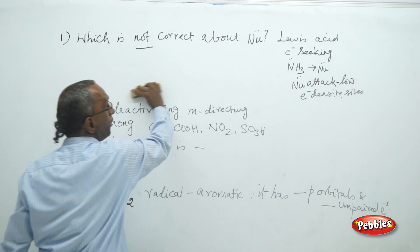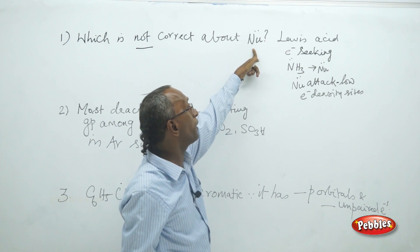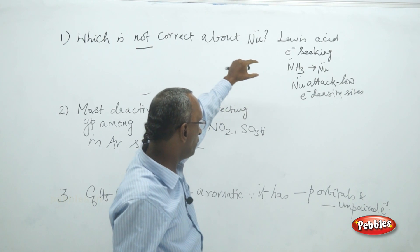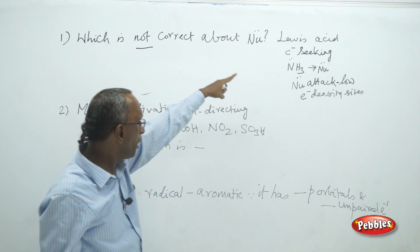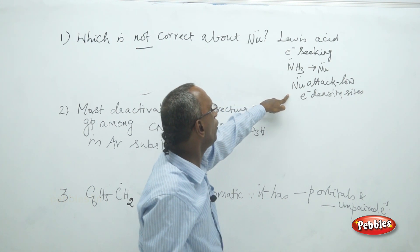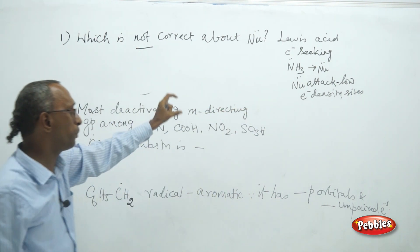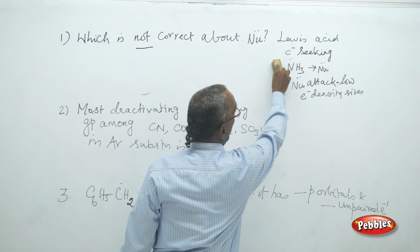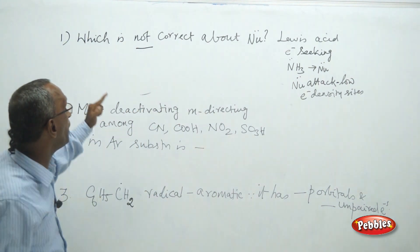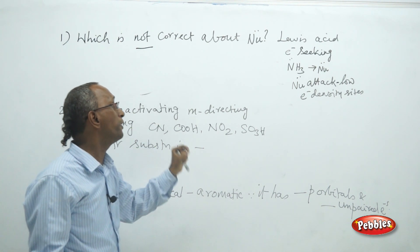Let us check all other possibilities. Nucleophiles are electron-seeking species — electrons are negatively charged and the nucleus is positively charged, so they seek one another. Ammonia has an unpaired electron, so it is a nucleophile. Nucleophilic attack takes place only at low electron density sites. So the second, third, and fourth statements are correct. The first statement — nucleophile is a Lewis acid — is not correct. The correct statement is that a nucleophile is a Lewis base.